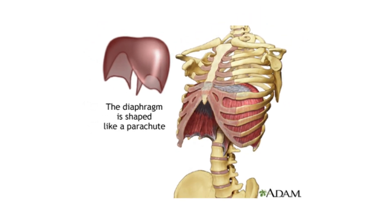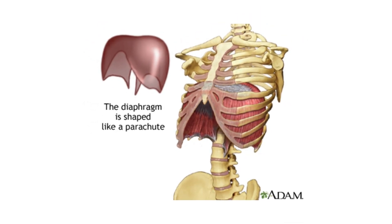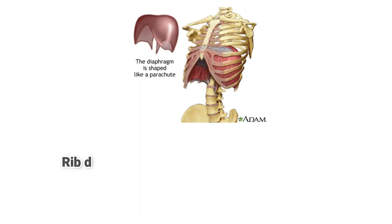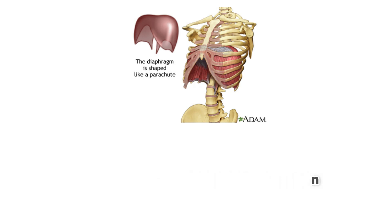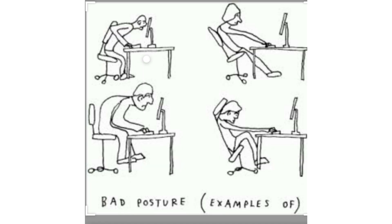The diaphragm is shaped like a parachute. Rib dysfunction is the loss of normal function of the ribcage, mainly its rhythmic action. Bad posture causes strain in the ribs and also strain in the diaphragm — this is why, when you sit in improper posture, your breathing will be affected.